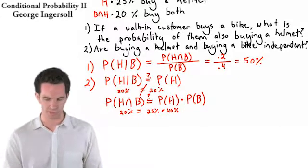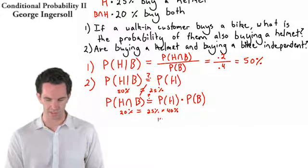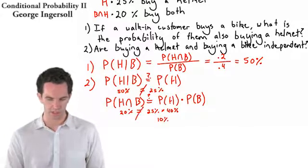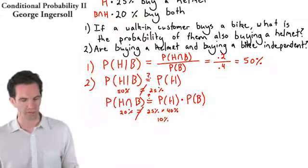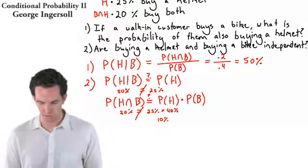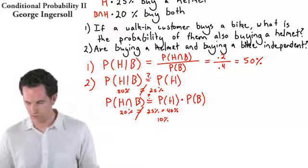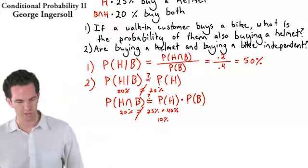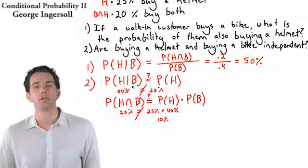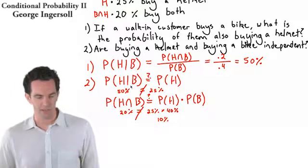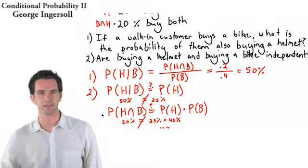25% times 40% is actually equal to 10%, not 20%. So again, we are justified — not by assumption but by proof — that these events are not independent. They are dependent events.